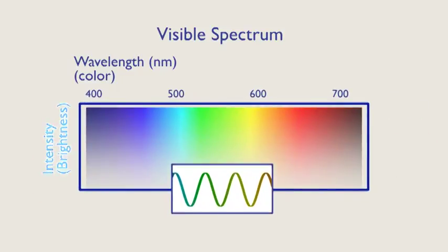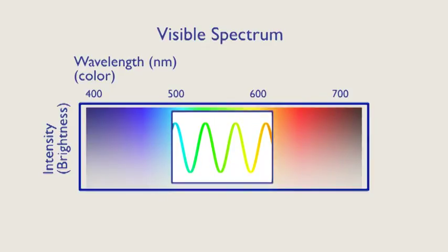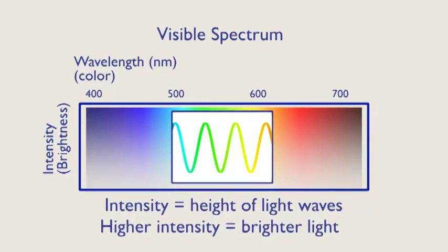The intensity of the light waves is transduced by the visual system as brightness information. The higher the intensity of the waves, the brighter the light is perceived to be.